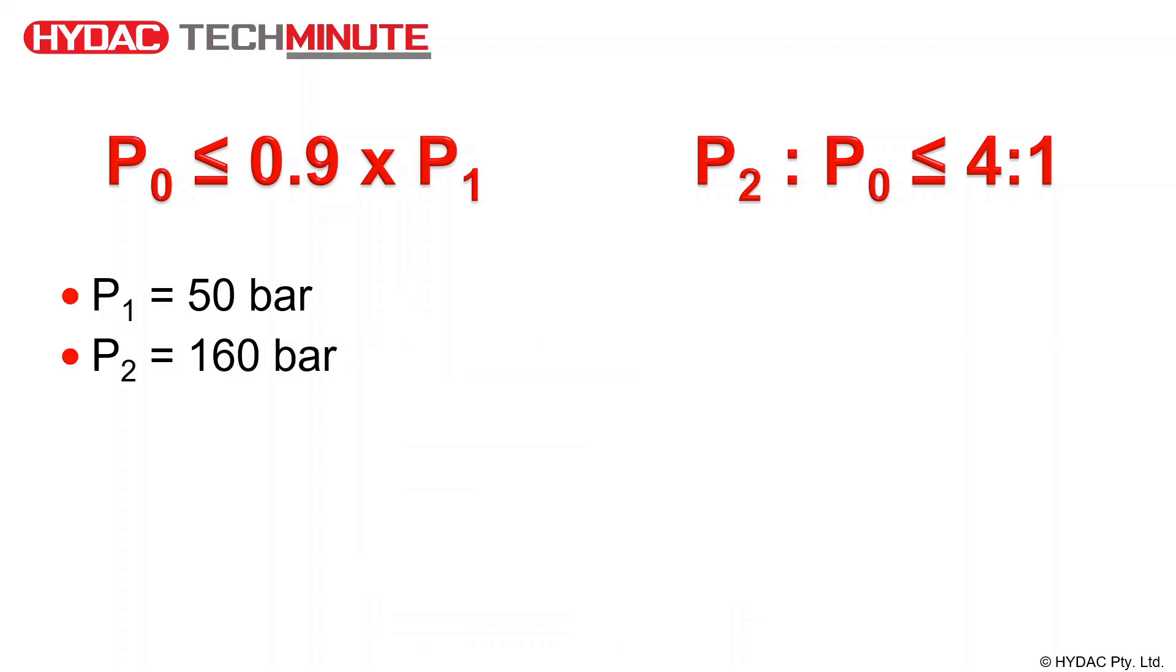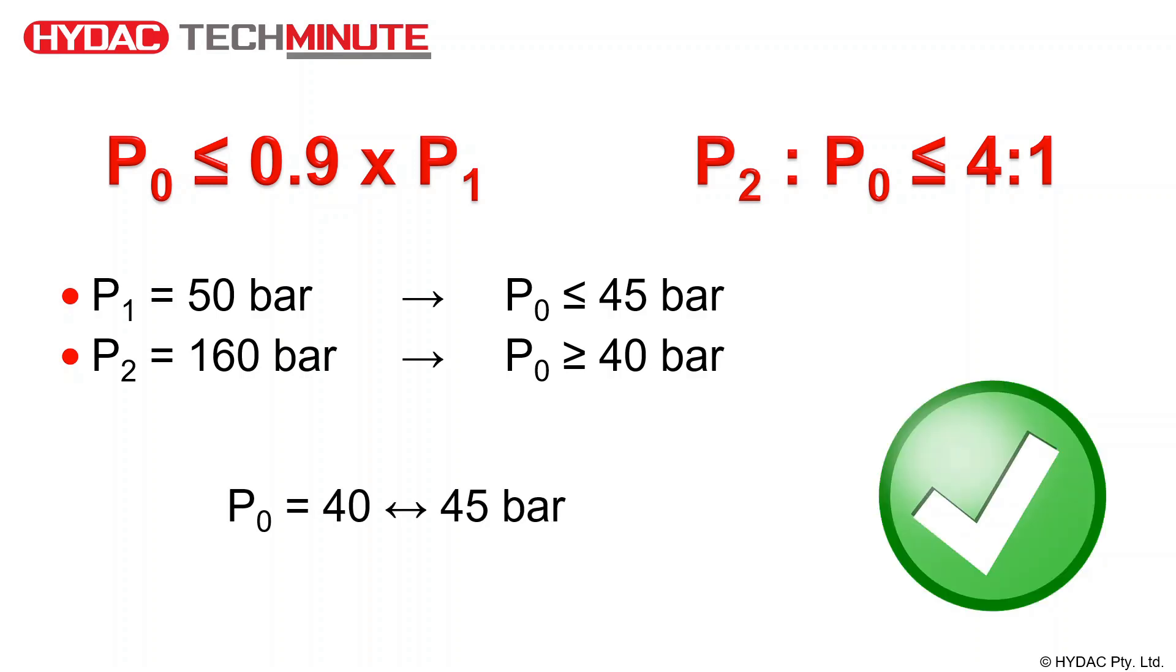Here is an example of determining the correct pre-charge pressure for the accumulator and the system. With a minimum system pressure of 50 bar, we can use the 90% rule to determine that our pre-charge pressure should be 45 bar or less. And with a maximum system pressure of 160 bar, we can determine that the pre-charge pressure should be 40 bar or more. Therefore, a pre-charge pressure between 40 and 45 bar is acceptable.